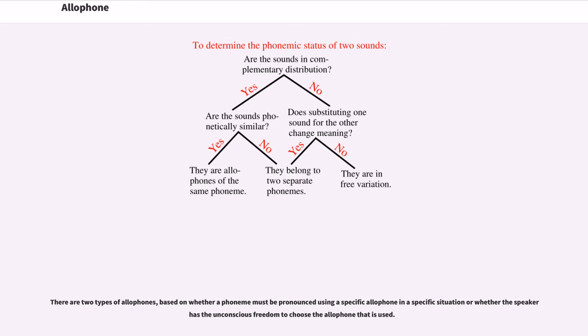There are two types of allophones, based on whether a phoneme must be pronounced using a specific allophone in a specific situation or whether the speaker has the unconscious freedom to choose the allophone that is used.